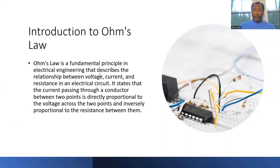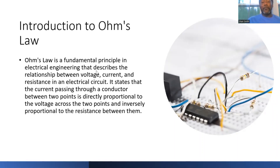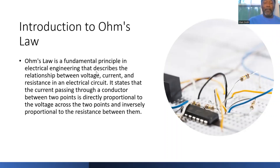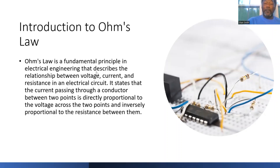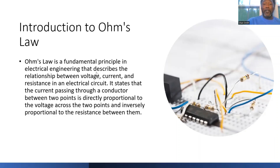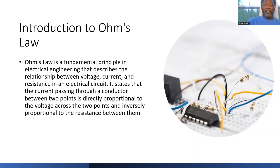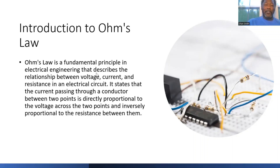Ohm's Law is the fundamental principle in electrical engineering that describes the relationship between voltage, current, and resistance in an electrical circuit. It states that the current passing through a conductor is directly proportional to the voltage across it. For example, increasing voltage from 24V to 48V will double current from 1 amp to 2 amps. Decreasing voltage from 24V to 12V decreases current from 1 amp to 0.5 amps.